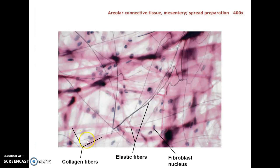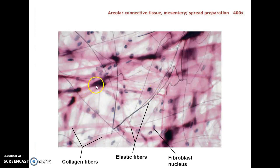We're going to start with areolar connective tissue. This is that generic jelly-like connective tissue that's a space filler supporting blood vessels and nerves throughout the body — just under your skin. It's a jelly-like tissue you can smear across the slide. You can see all the elements of typical connective tissue: the thicker collagen fibers, lightly stained, and the reticular fibers, also made of collagen but very thin, which cells use to orient within the tissue.